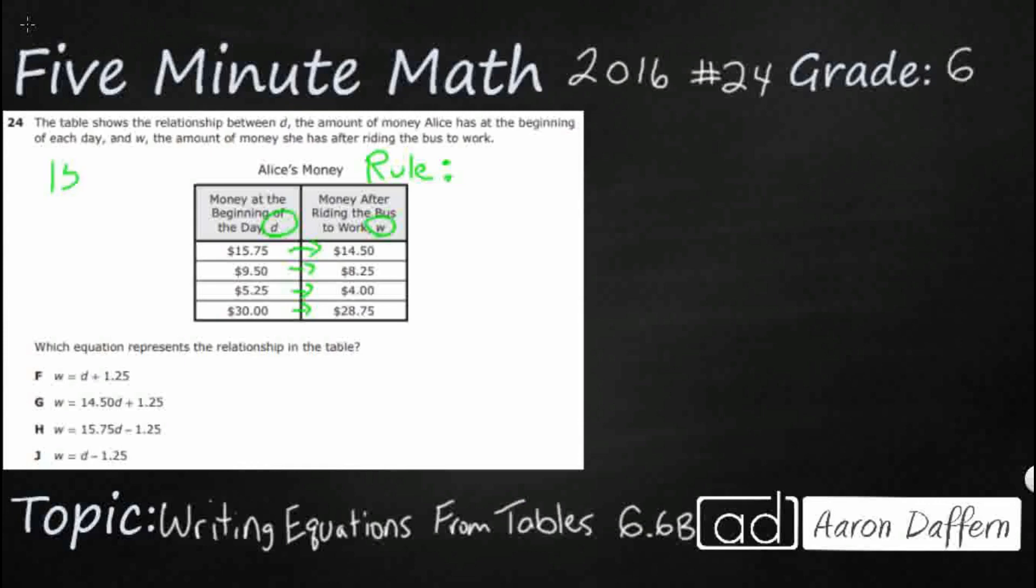So let's just take our first pair here. $15.75 minus something is going to get you $14.50. So I know that I can use my fact family and I can just actually write a related fact. I can actually just subtract these two to get that missing number.